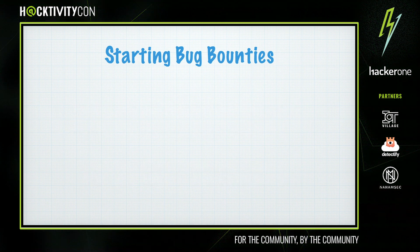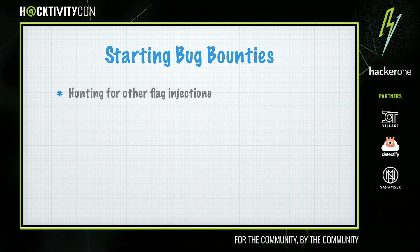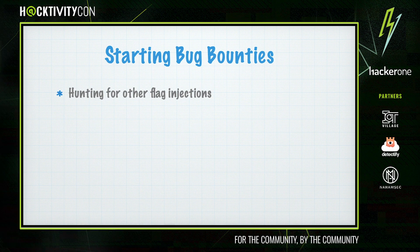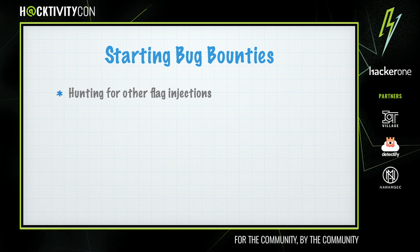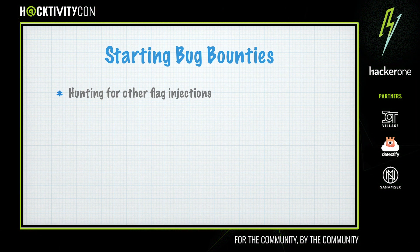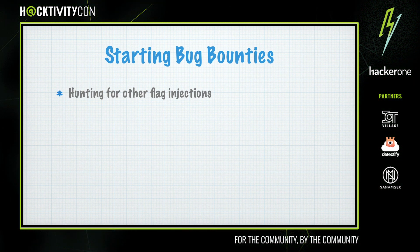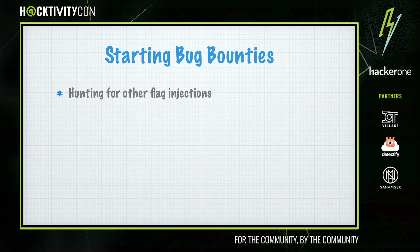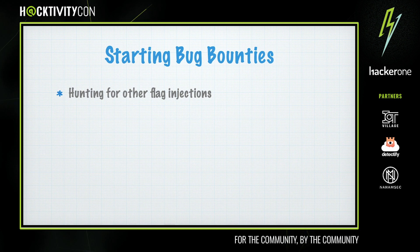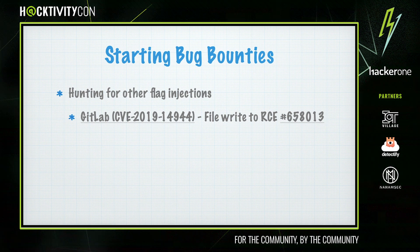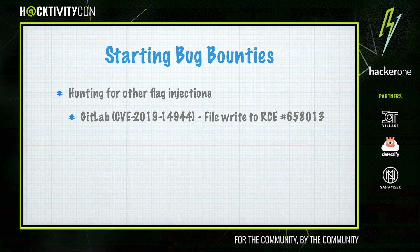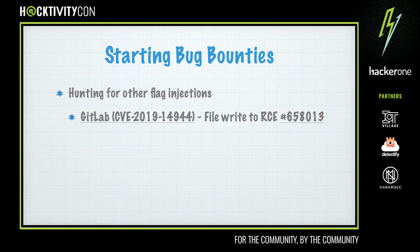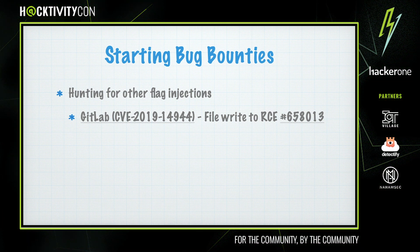After reading the report I started looking into GitLab to see if there were any more places where a similar technique could be used. After a bit of testing I discovered quite a few similar issues throughout Gitaly, which is the service GitLab uses to wrap all their calls to git. The worst one allowed semi-controlled content to be written to an arbitrary location, and you could use the same technique as the original report to overwrite the authorized keys file and gain remote code execution.